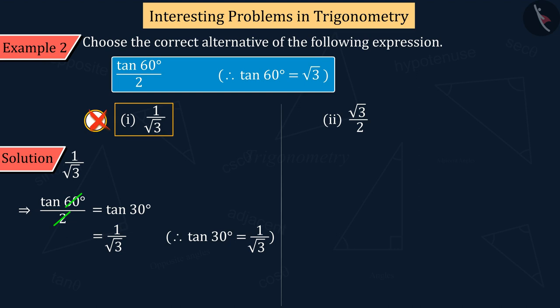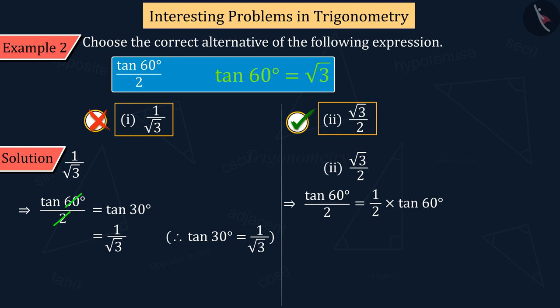Here, option 2 is the right answer. Let us discuss this. We can also write the given expression in this way. We know that the value of tan 60 degrees is the square root of 3. By substituting this, the value of the given expression is found to be square root of 3 by 2, which is correct.